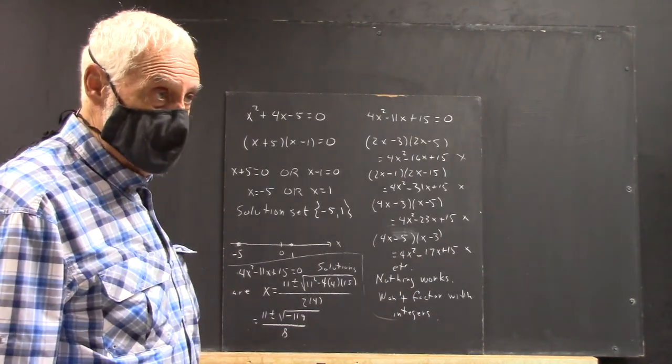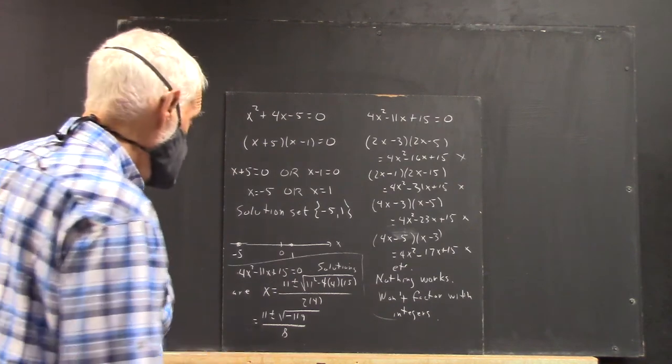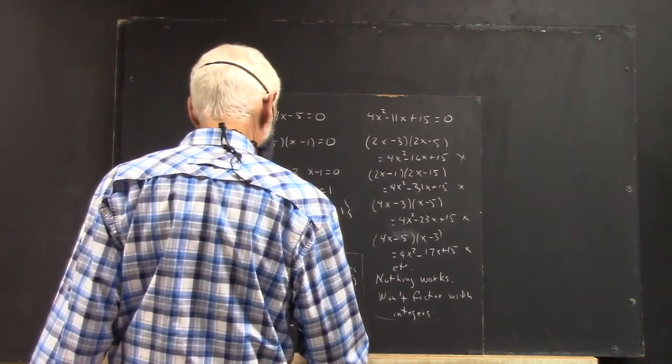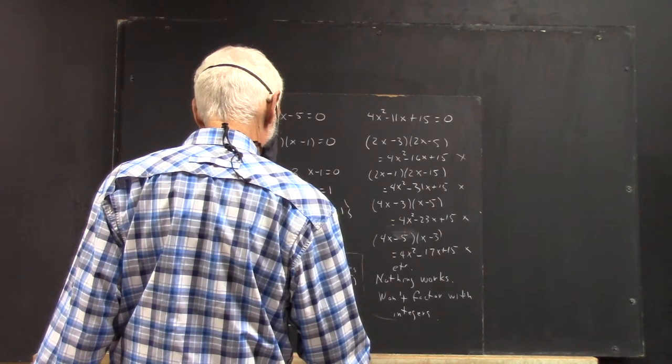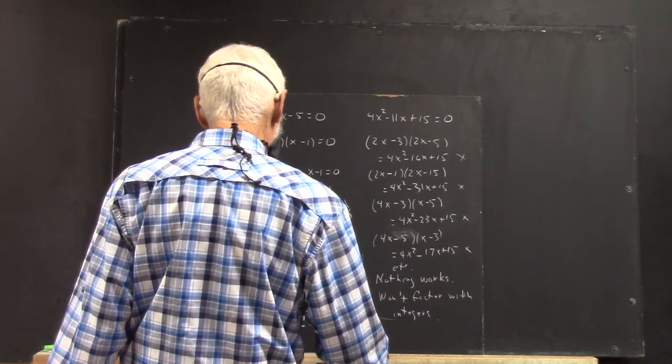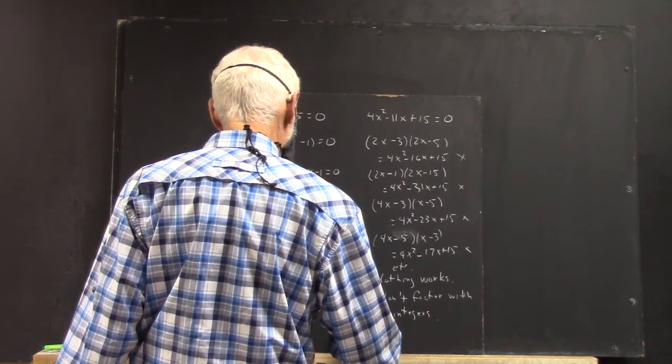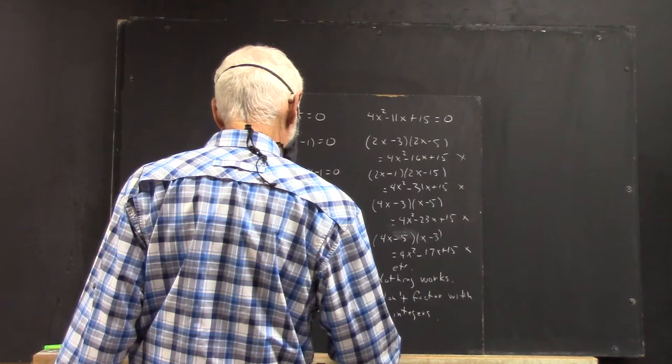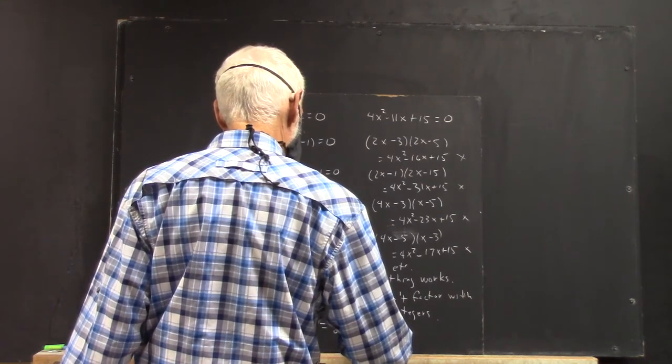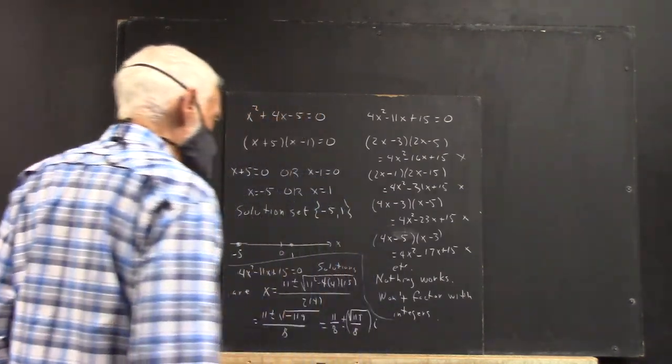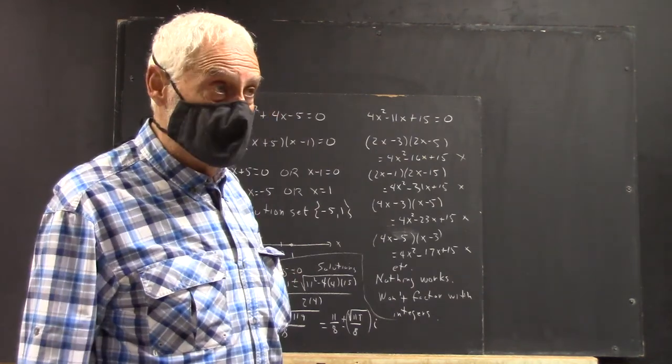Okay. So this thing does have solutions, but they're complex numbers. You can write that as 11 eighths plus or minus square root of 119 over 8 times i. So there are solutions, but they're not real numbers.